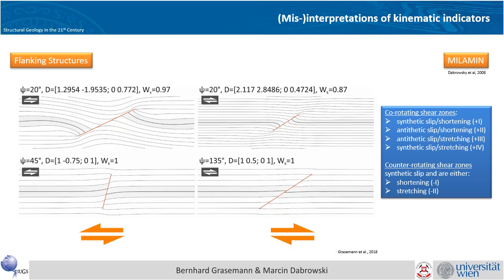There are some model results modeled with Milimin from Marcin Dabrowski. The first structure has a sinistral shear and looks like a shear band, but it has a very strong reverse drag. It might be very difficult in nature to distinguish this from the structure with a dextral shear sense which also shows a very strong reverse drag — this is some kind of a mirror image of the shear sense, and this might create confusion.